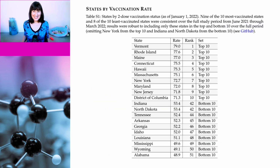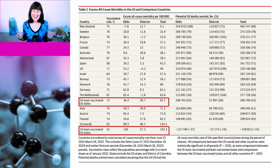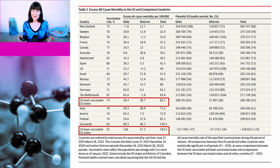The 10 most vaccinated states were Vermont, Rhode Island, Maine, Connecticut, Hawaii, Massachusetts, New York, Maryland, New Jersey, and District of Columbia. The 10 least vaccinated states were Indiana, North Dakota, Tennessee, Arkansas, Georgia, Idaho, Louisiana, Mississippi, Wyoming, and Alabama. In the 10 most vaccinated states, which have an average vaccination rate of 73%, the excess mortality was 65.1 per 100,000. Whereas for the 10 least vaccinated states, it is 193.3 per 100,000 — almost three times as much.